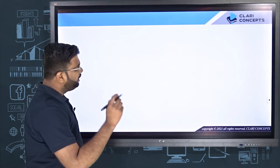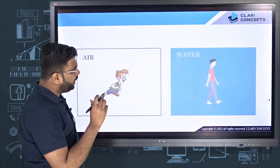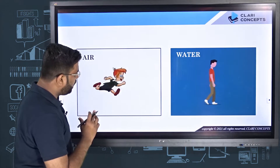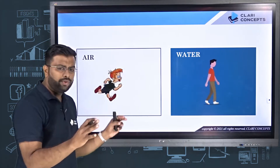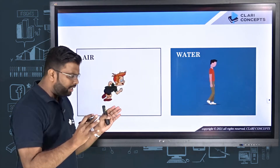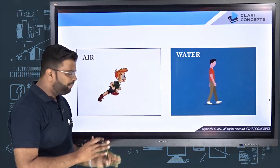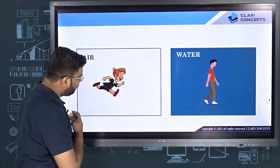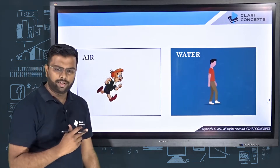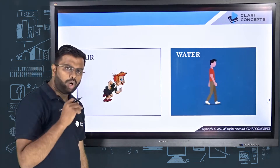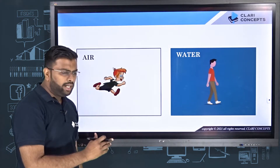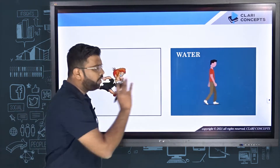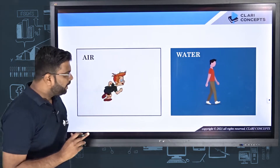Try an experiment — think about you are traveling or running in open atmosphere in air on a road at, let's say, 40 kilometers per hour, and you want to run with the same speed in a pool of water, let's say in a swimming pool for example.